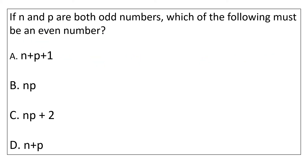If n and p are both odd numbers, each of the following must be an even number. When n and p are odd numbers, we have four options to evaluate for even number.